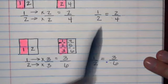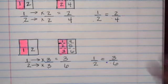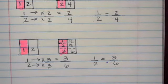All three of these fractions—one half, two fourths, and three sixths—are all equivalent. I'm going to give you one more example.